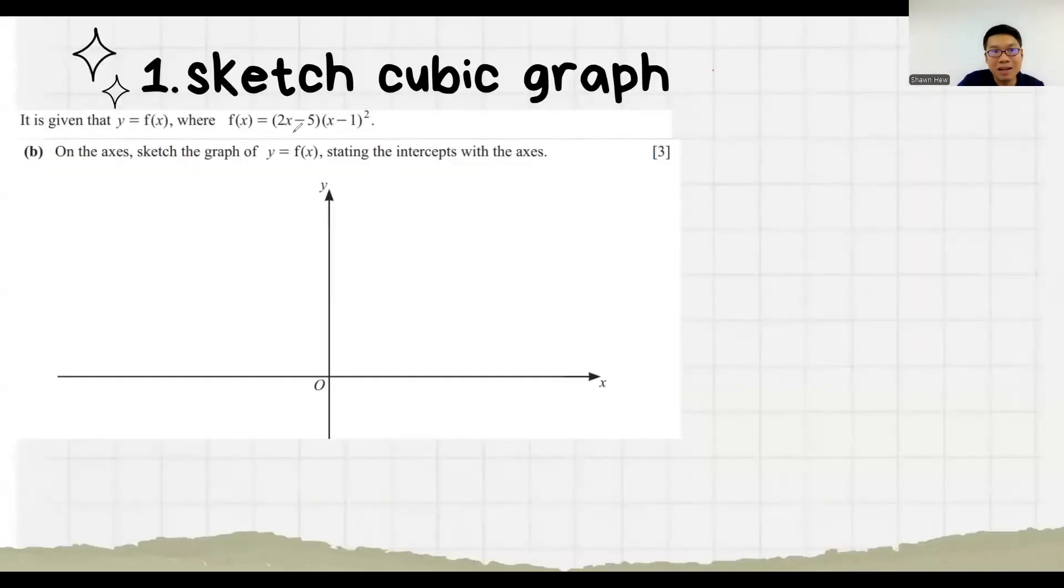Next question is still the same but they give you two brackets but one of the brackets is square. This square is telling you this coordinate x equals to 1 is not only intersection point, also a turning point. So we can confirm x is 5 over 2 and x is 1. When x is 1, it's a turning point. Here it's just an intersection. Then we also need to find y intersection minus 5. So it must go up and touch this point must be a turning point. Then it must turn back up. So this is how we draw it.